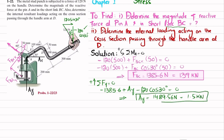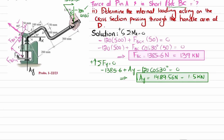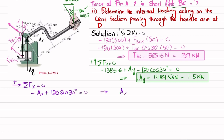Now we find Ax using the equation: the sum of all forces along the x-direction must equal zero, with forces to the right taken as positive. We have Ax and the horizontal component of the 120 newton load. Writing: −Ax + 120 × sin(30°) = 0, so Ax = 60 newtons.